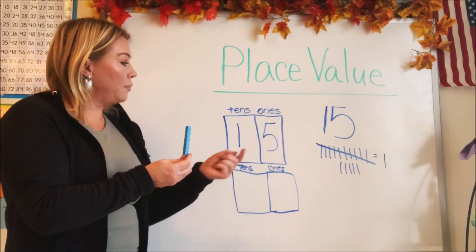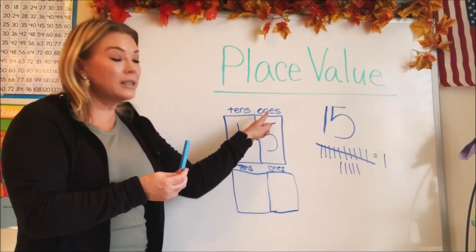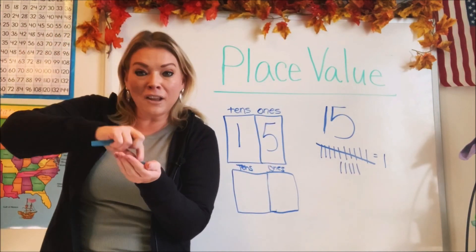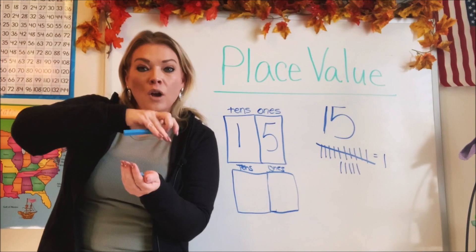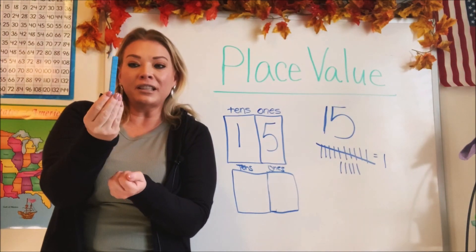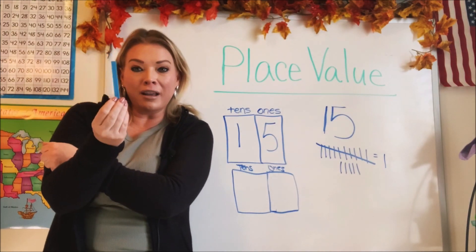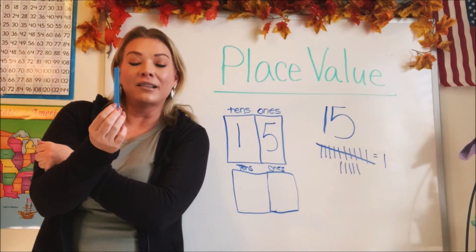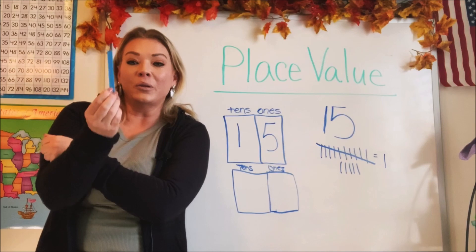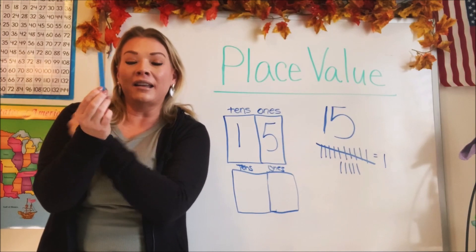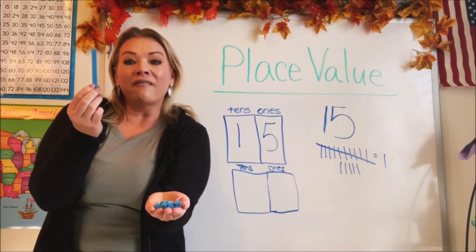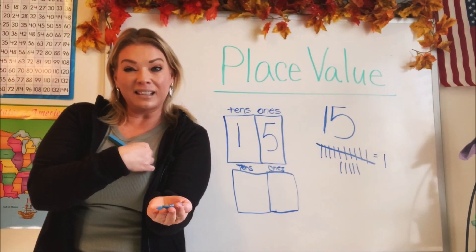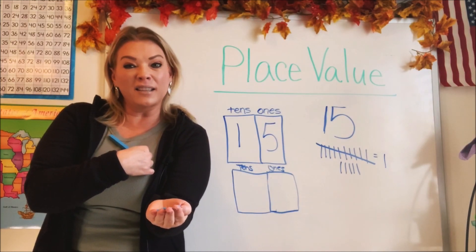So this would be a 10, and then we'd have five little blocks left over as our ones. These are ones and this is a group of 10. And we only count by tens in place value. We can only go up to nine ones, because as soon as we add our 10th one, they all stick together and become this big tall tower.